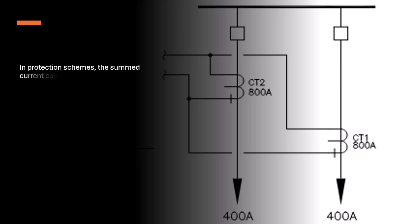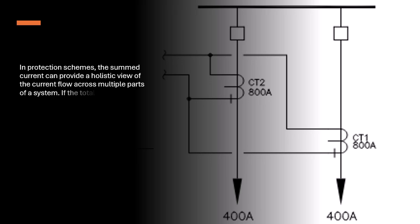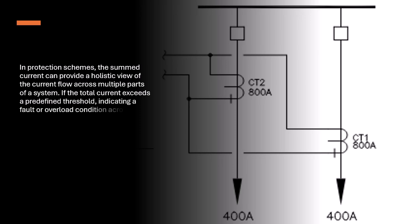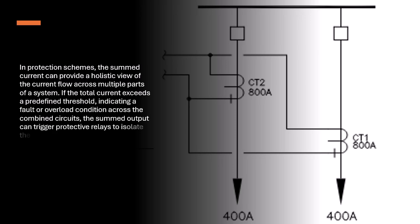In protection schemes, the summed current can provide a holistic view of the current flow across multiple parts of a system. If the total current exceeds a predefined threshold, indicating a fault or overload condition across the combined circuits, the summed output can trigger protective relays to isolate the affected area.